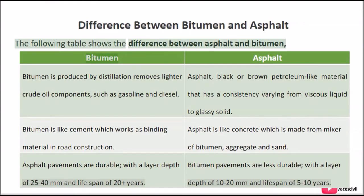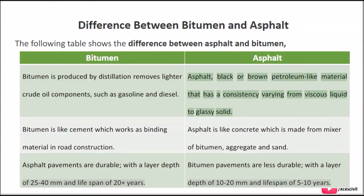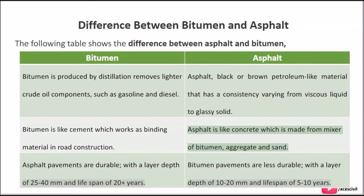Difference between bitumen and asphalt — the following comparison: Bitumen is produced by distillation, which removes lighter crude oil components such as gasoline and diesel. Asphalt is a black or brown petroleum-like material with a consistency varying from viscous liquid to glassy solid. Bitumen is like cement — it works as a binding material in road construction. Asphalt is like concrete — it is made from a mixture of bitumen, aggregate, and sand.